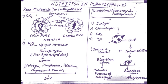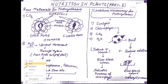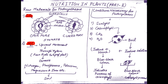What are the raw materials for the process of photosynthesis? The basic raw materials are carbon dioxide and water. Carbon dioxide is taken up into the plant cells by stomata. This is the structure of stomata — this is the open pore and this is the closed pore. These are the guard cells and this is the stomatal pore, surrounded by mesophyll cells.